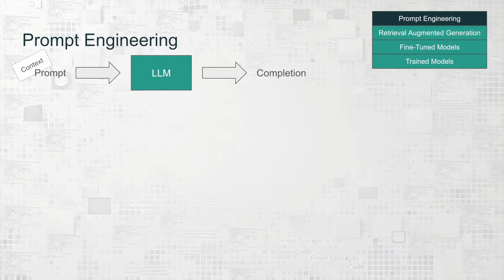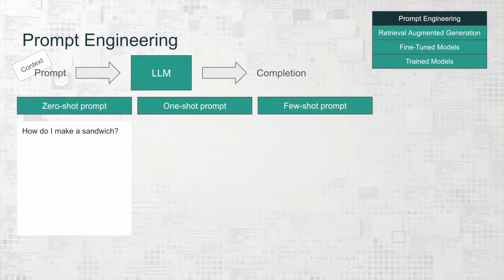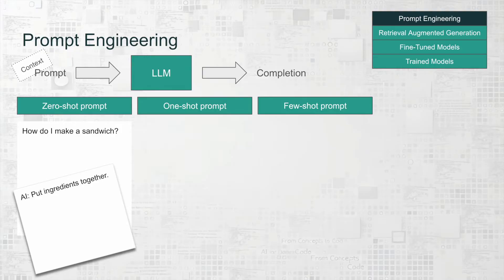There are different prompting techniques well-known in this area: zero-shot prompts, one-shot prompts, and few-shot prompts. As an example, let's say you want to ask an AI how to make a sandwich. With a zero-shot prompt, we directly ask the question: how do I make a sandwich? And AI could respond, well, put all ingredients together. That's not super helpful, right?